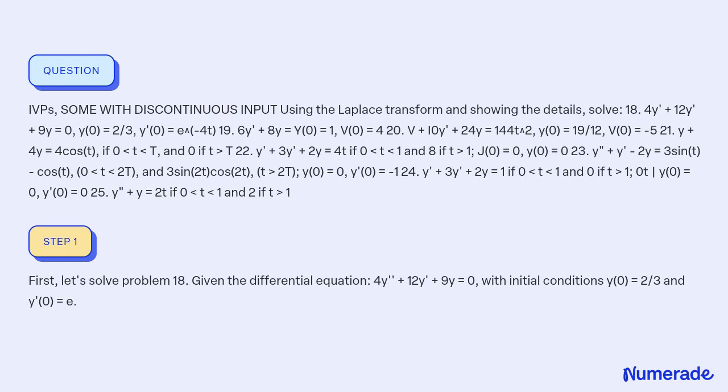First, let's solve problem 18. Given the differential equation 4y'' + 12y' + 9y = 0, with initial conditions y(0) = 2/3 and y'(0) = 0.